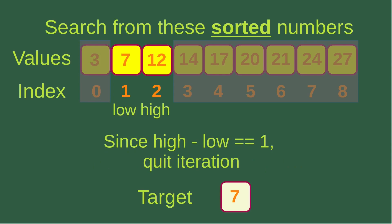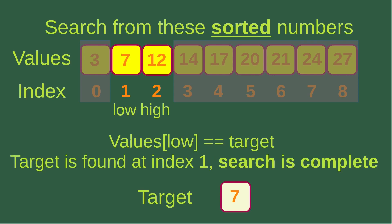The array is even shorter — only two elements remaining. Checking the condition: high is two, low is one, so high minus low is exactly one. I quit the iteration and check whether the low or high index corresponds to the target. The low index gives me number seven, which equals the target. The target is found at index one, and the search is complete.